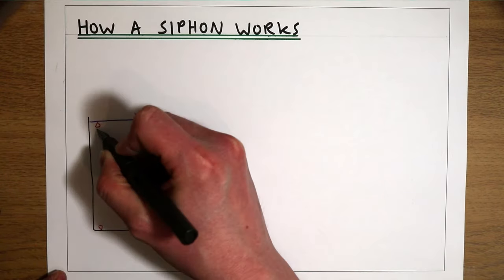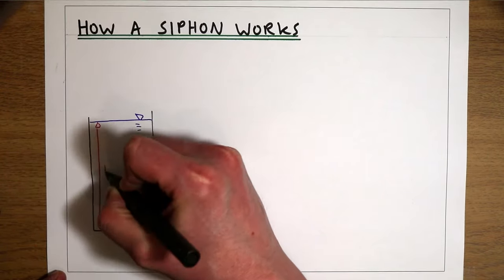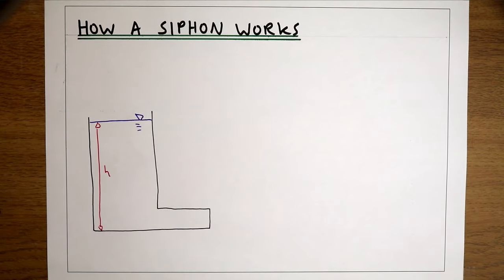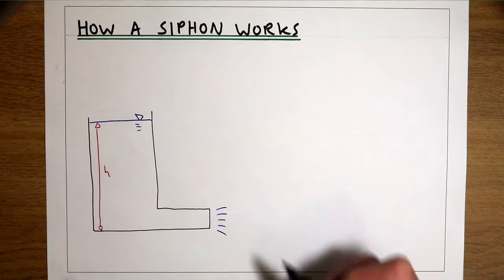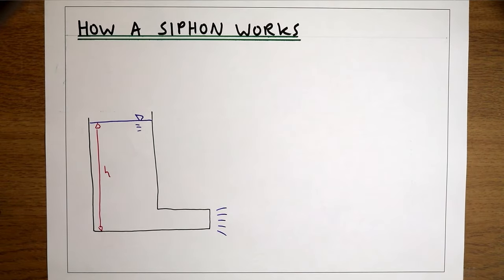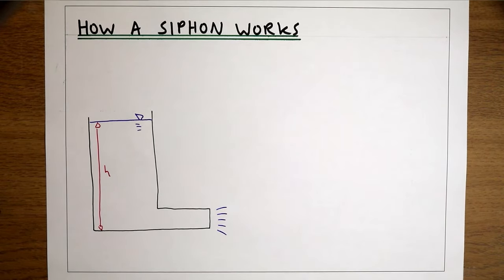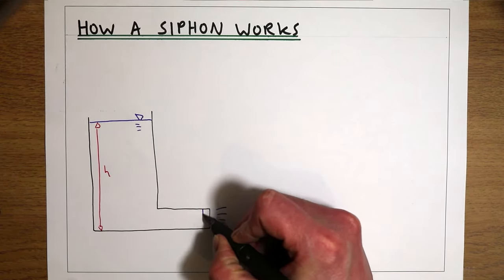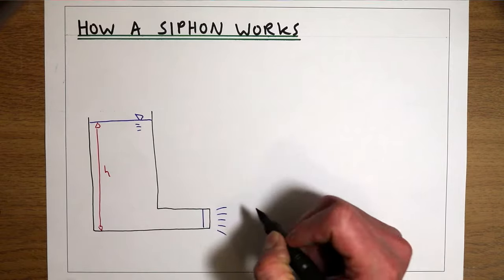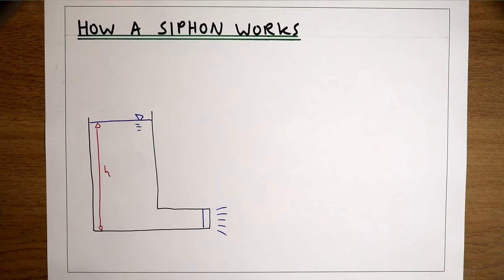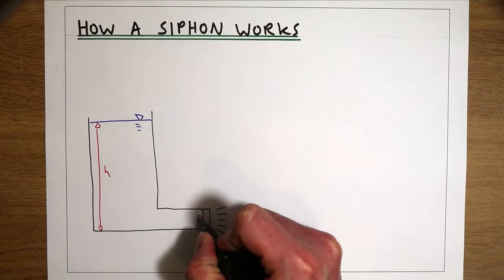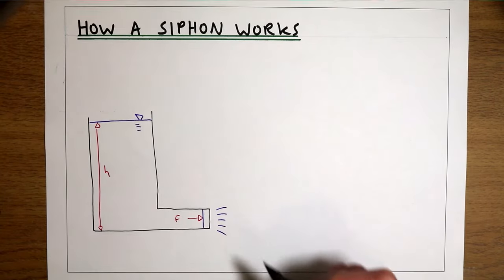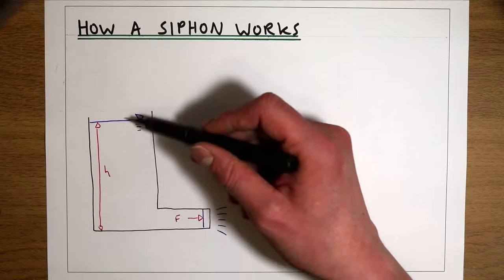What we're going to see is a flow of water out of that tank, and the reason for that is that water always flows from an area of high pressure to an area of low pressure. So if we think about the interface here between the tank and the atmosphere, we're going to have a force pushing the water in this direction, proportionate to the pressure from this height of water.